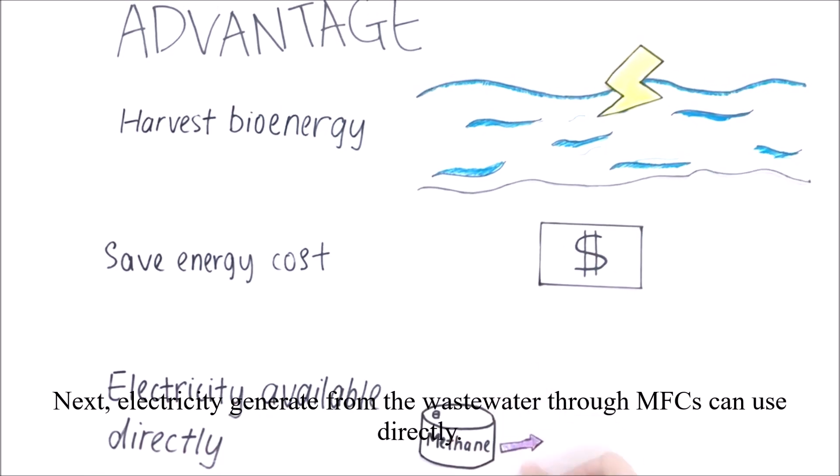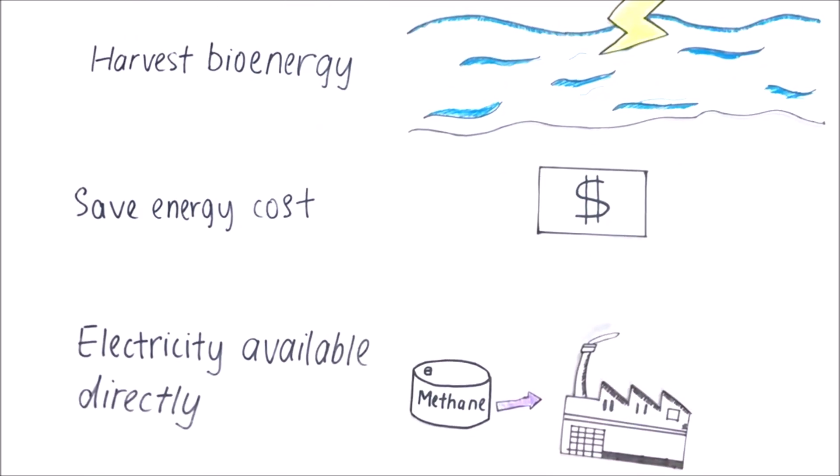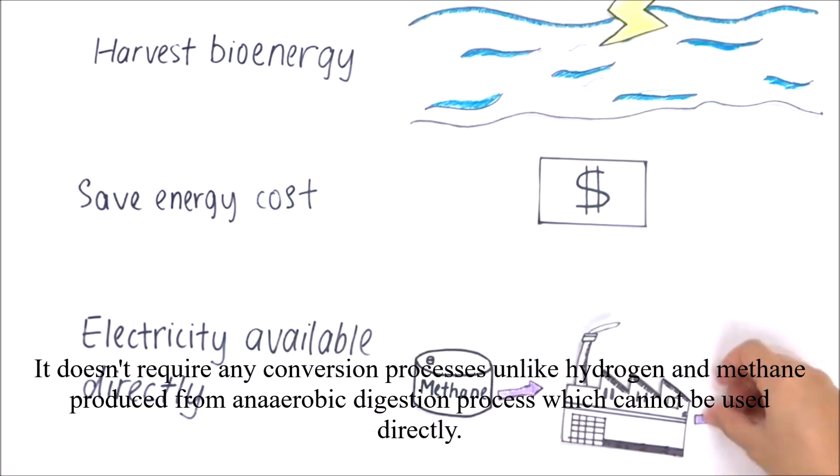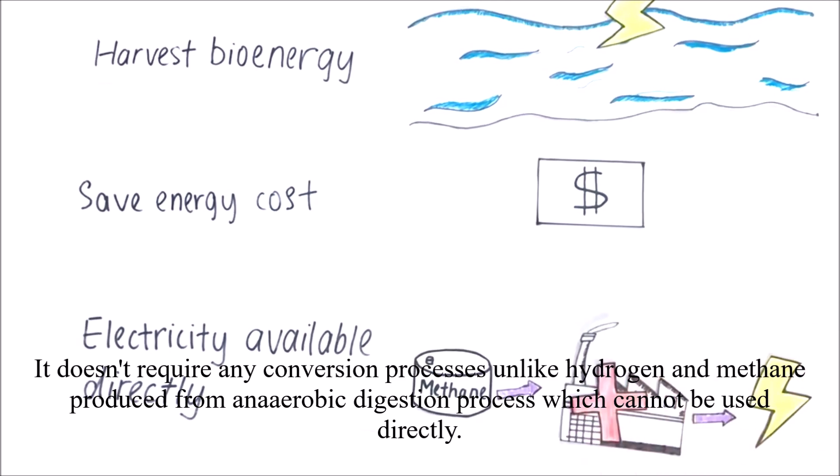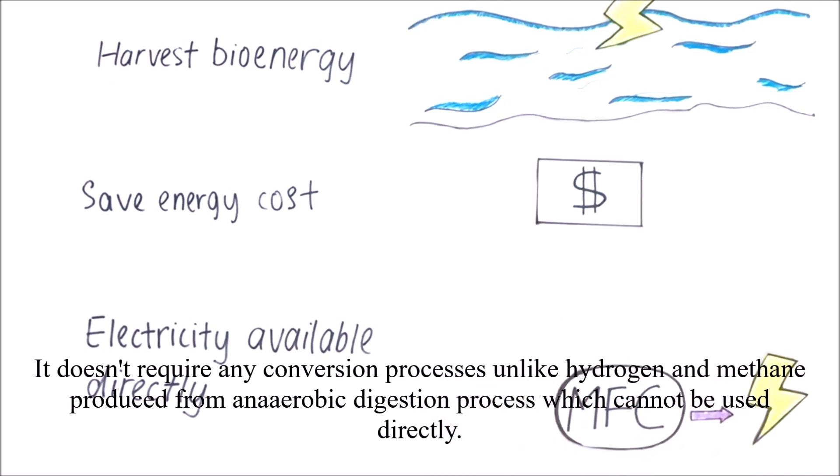Next, electricity generated from the wastewater through MFC can be used directly. It does not require any conversion process unlike hydrogen and methane produced from anaerobic digestion process which cannot be used directly.